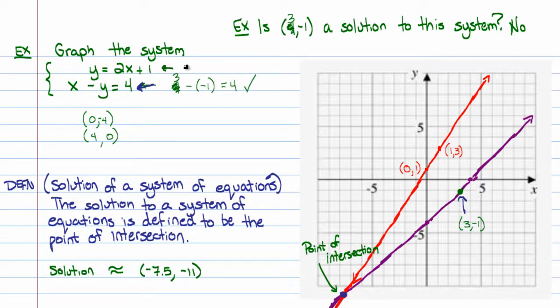The question is, is 3 comma negative 1 a solution to this system? Well, if we plug that into the second equation, x equals 3 and y equals negative 1, we'll have 3 minus a negative 1. That becomes 4, and it does check out for that equation. So great, we're halfway there. Let's see if it works for the other equation. I will let y equal negative 1, and I will allow x to equal positive 3. And I just want to see if the left-hand side equals the right-hand side. You see the left-hand side here is negative 1, but the right-hand side, when I do the math here, is 7. That's not the same. That doesn't work out. So we can see that it doesn't work for the first equation, but it does work for the second. But unfortunately, because it fails for the first, it's not a solution to the system.